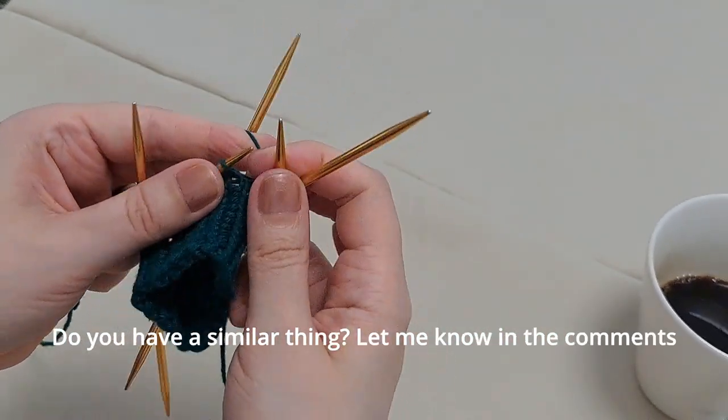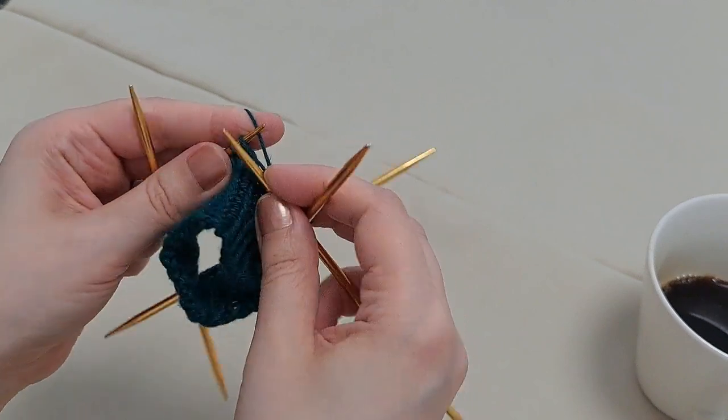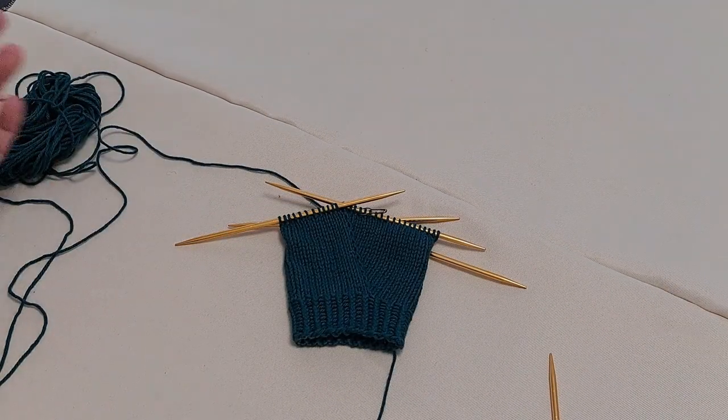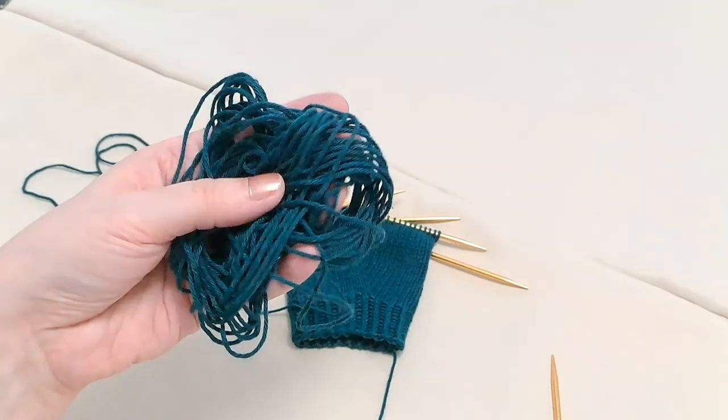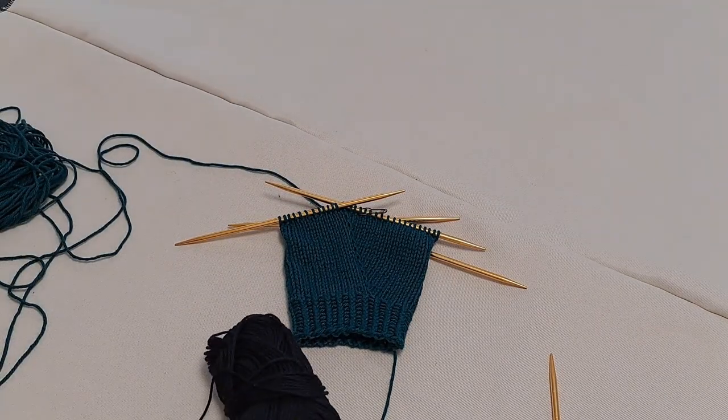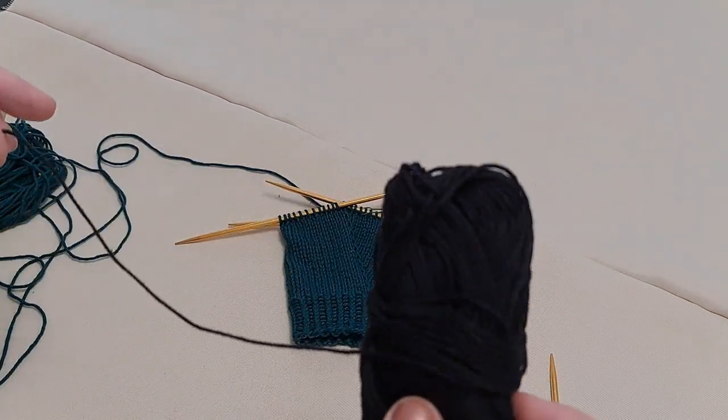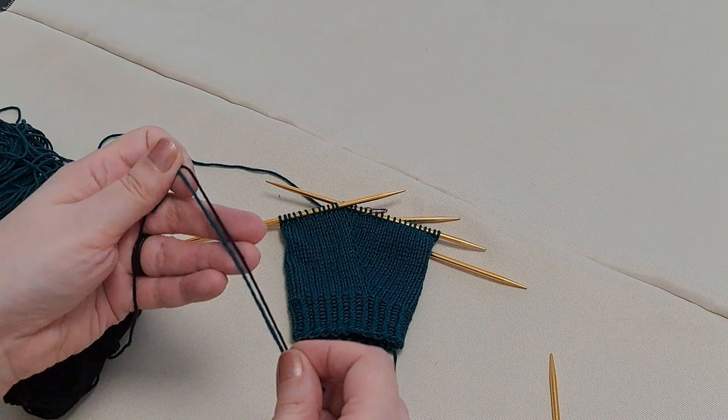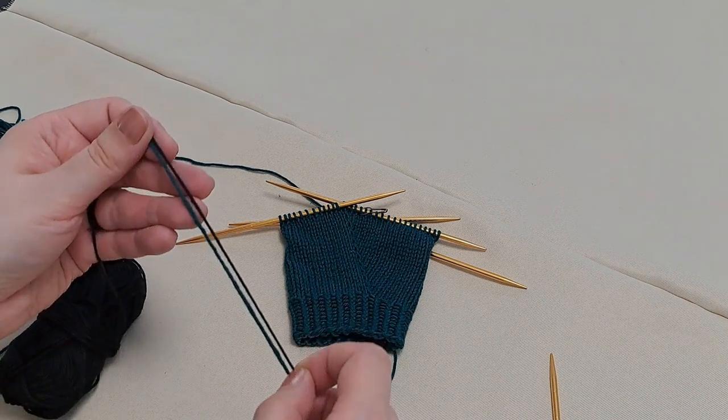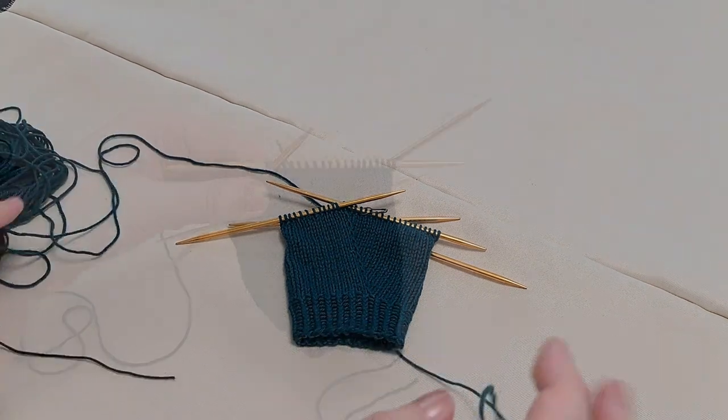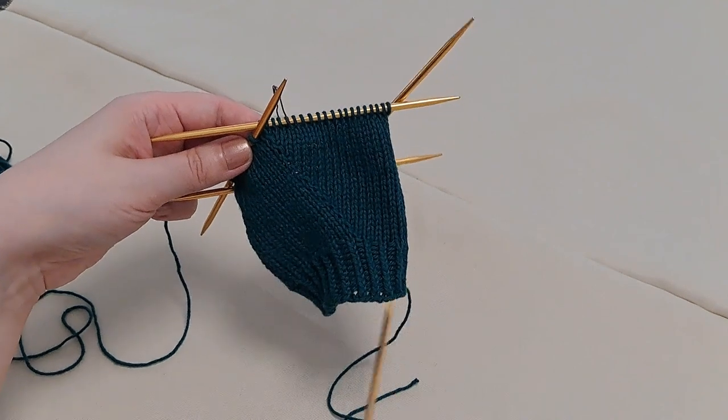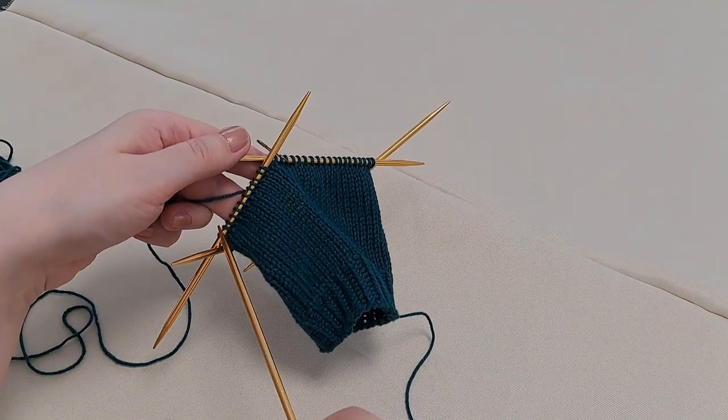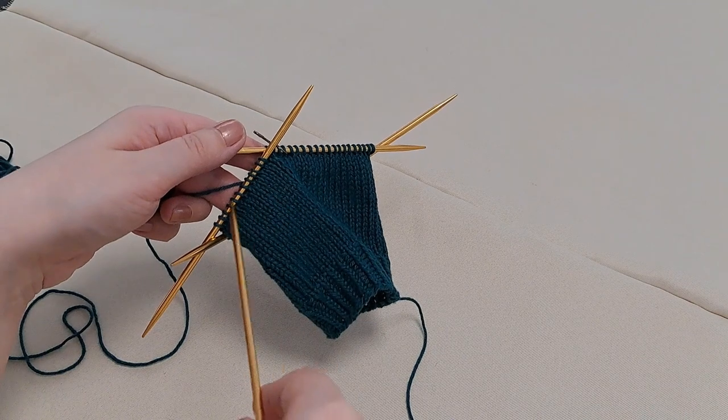So continue like this increasing every second row until you have 20 stitches on needle number one. I have finished my increases and I'm running really low on yarn. Hence I'm introducing accent colors. This is a cotton yarn left over from a previous project. It's a bit lighter than my cotton feel but at this point it's the only option I really have. My last increase is here and I now have 20 stitches on needle one. I'm going to work through these and cast off these 10 stitches. This thing here will create my thumb.